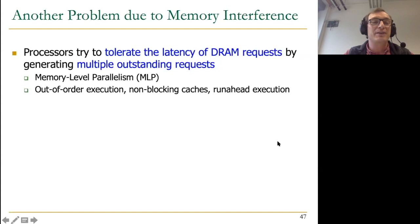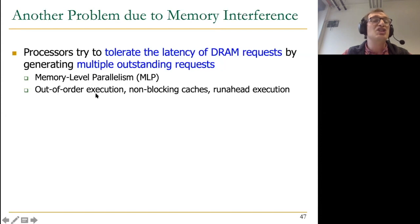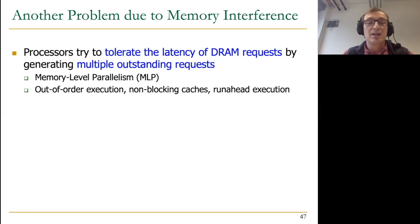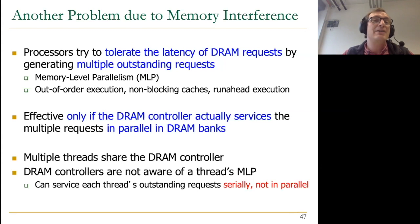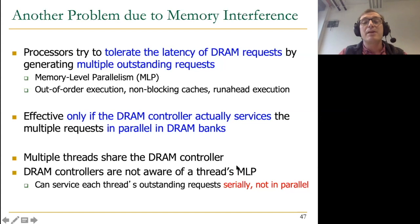The problem is actually even worse than discussed. Processors are designed to tolerate memory request latency by generating multiple outstanding requests — this is called memory-level parallelism. Hardware machinery like out-of-order execution, non-blocking caches, and run-ahead execution generate many outstanding requests. The goal is to overlap the latencies of requests serviced in different banks. But this is only effective if the DRAM controller actually services multiple requests in parallel. We found that because DRAM controllers are not aware of a thread's memory-level parallelism, they can destroy the bank-level parallelism of each thread, servicing each thread's outstanding requests serially rather than in parallel.